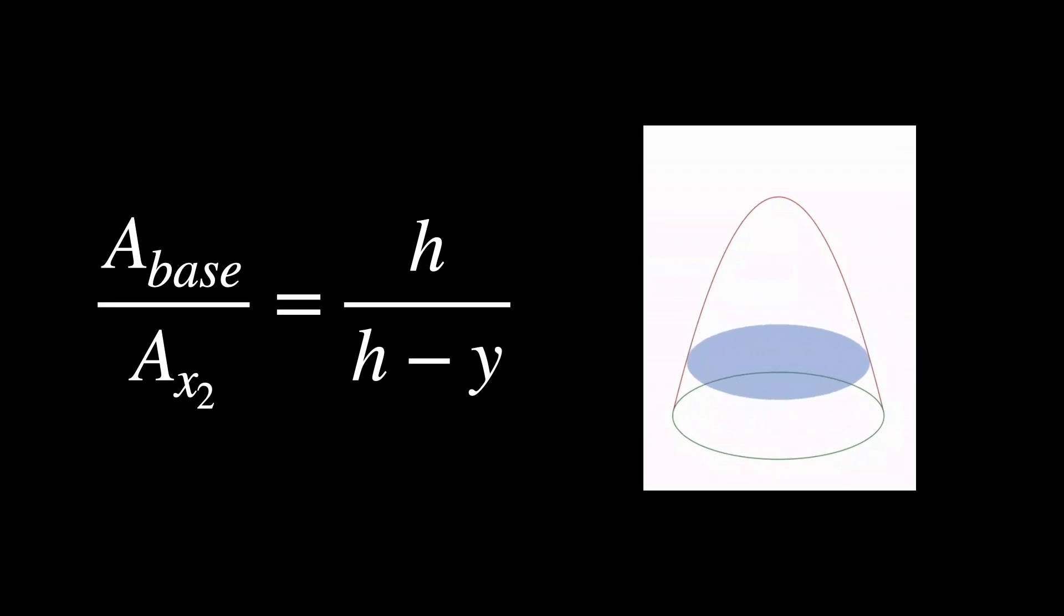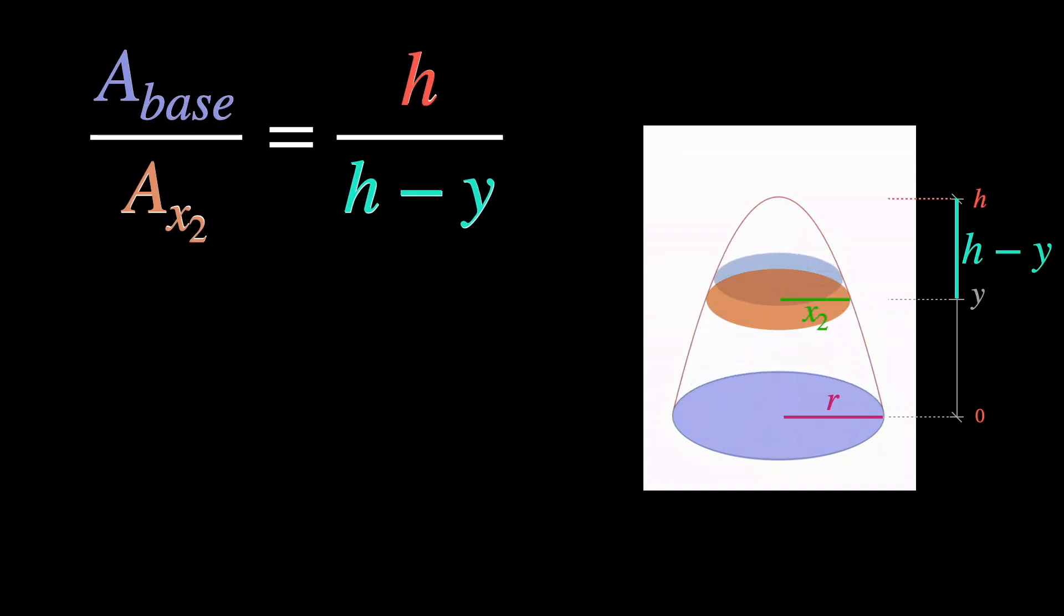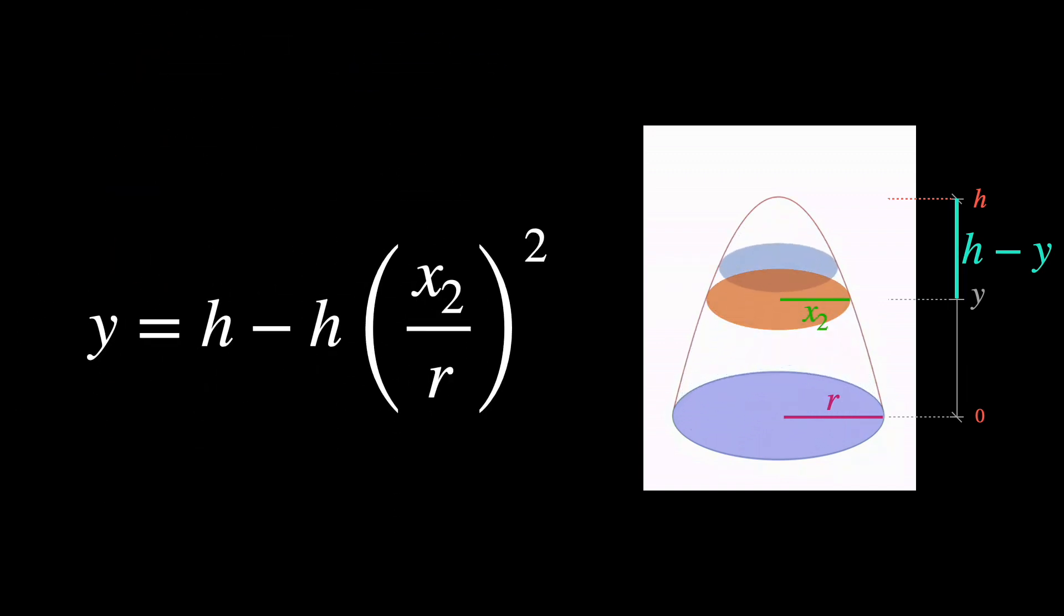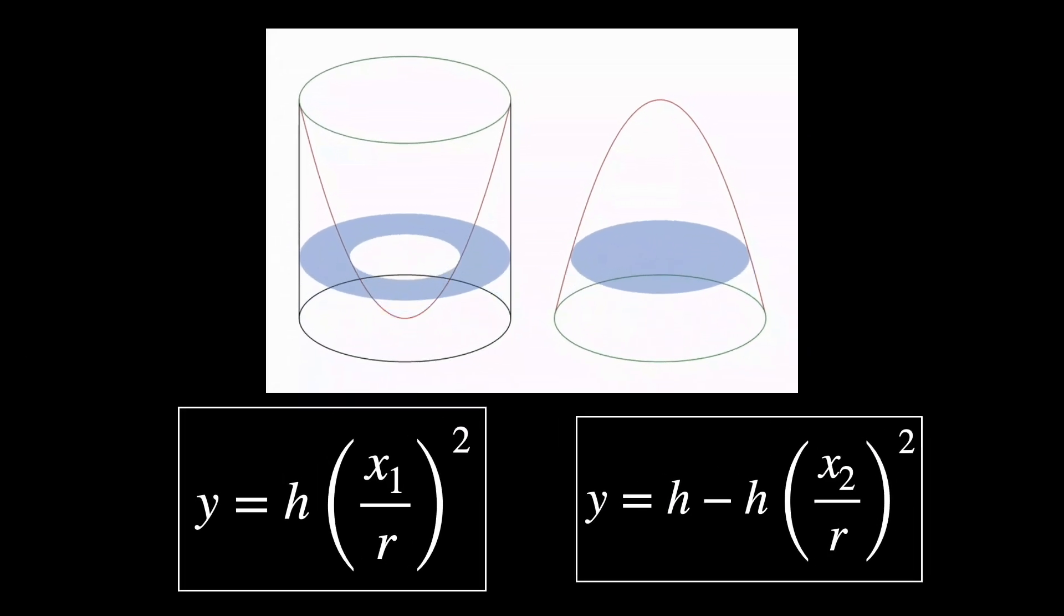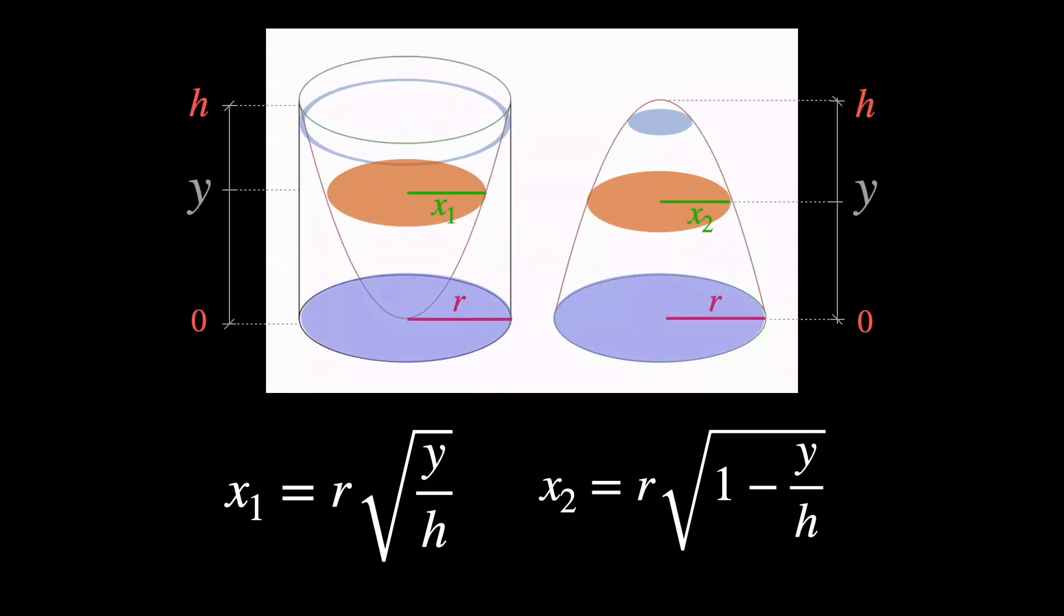Meanwhile, for the second upside-down paraboloid, we have Y equals H minus H times X2 over R squared. Isolating X in each of these equations, we get X1 equals the square root of Y over H times R, and X2 equals the square root of 1 minus Y over H times R, for the first and second paraboloids, respectively.